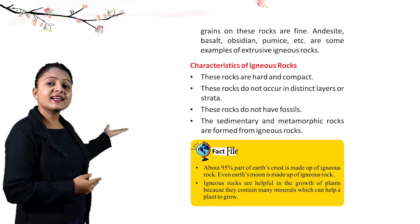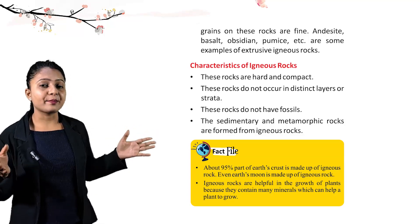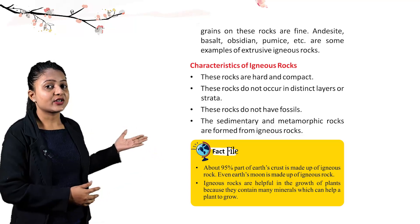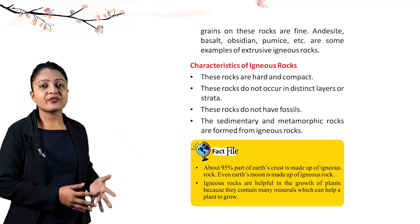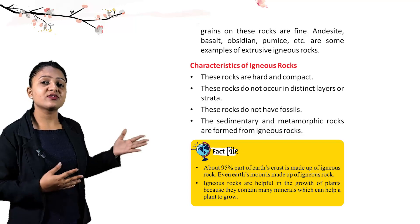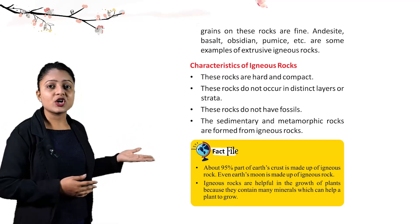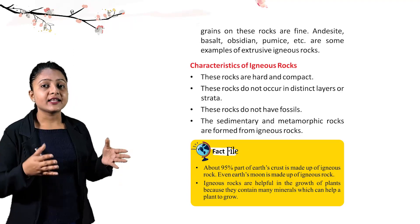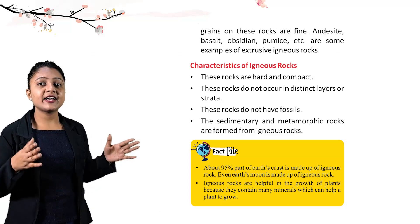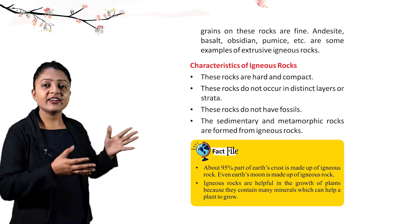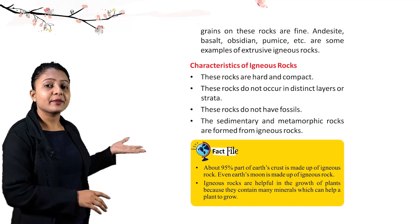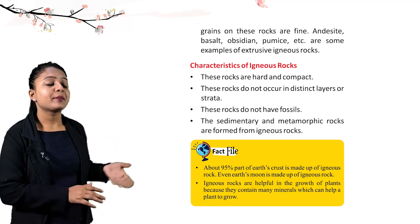Characteristics of igneous rocks: they are hard and compact; they do not occur in distinct layers or strata; they do not have fossils. About 95% of the earth's crust is made up of igneous rock. Even the Earth's moon is made up of igneous rock. Igneous rocks are helpful for plant growth as they contain many useful minerals.